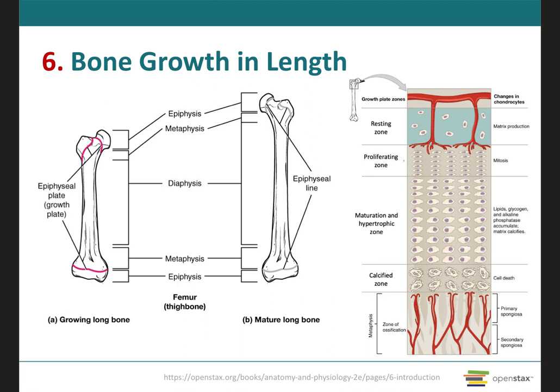Remember from the previous learning outcome that appositional growth is due mainly to the deposition of extracellular matrix on the cartilage surface by chondroblasts, and that interstitial growth occurs by cell division of chondrocytes and also the continued secretion of cartilage extracellular matrix by these chondrocytes. The activity of the epiphyseal plate is the only way that the diaphysis can increase in length.